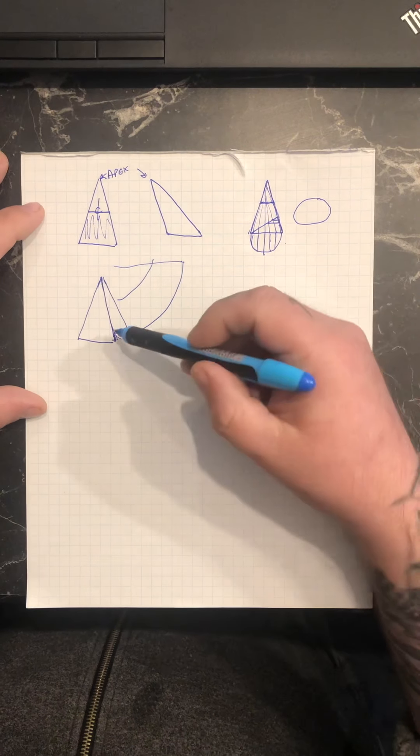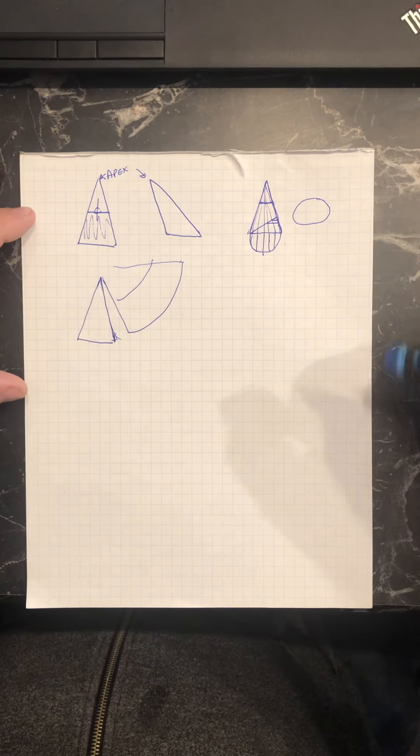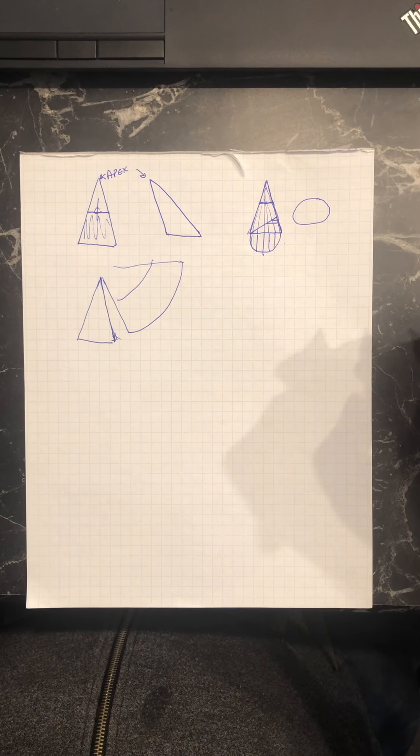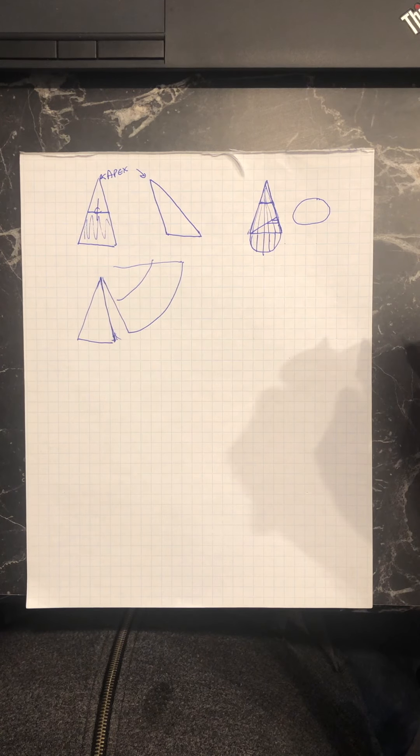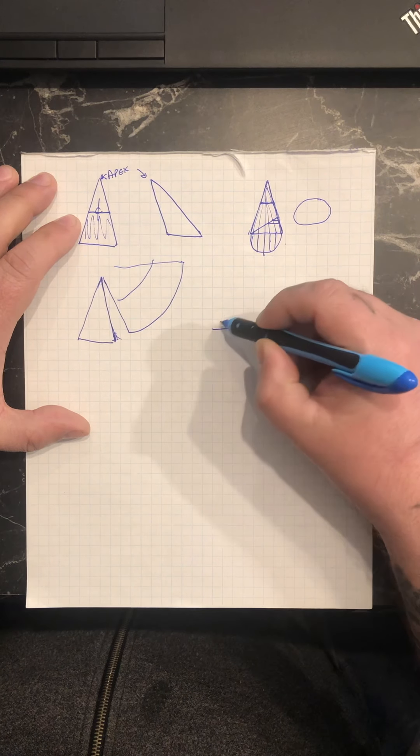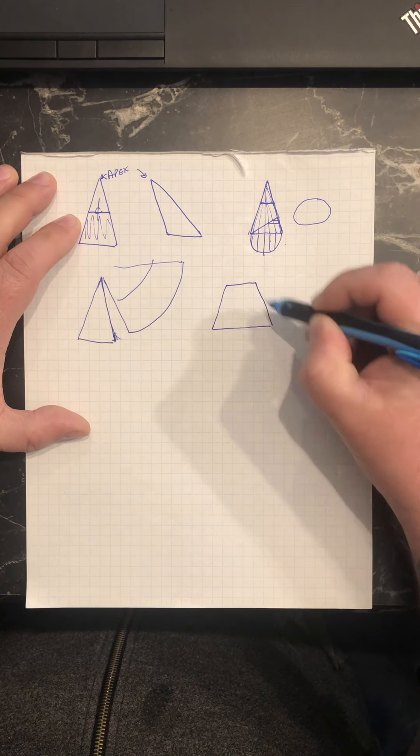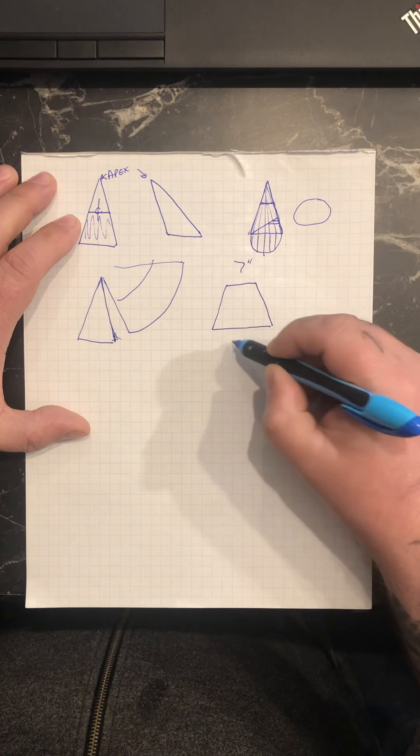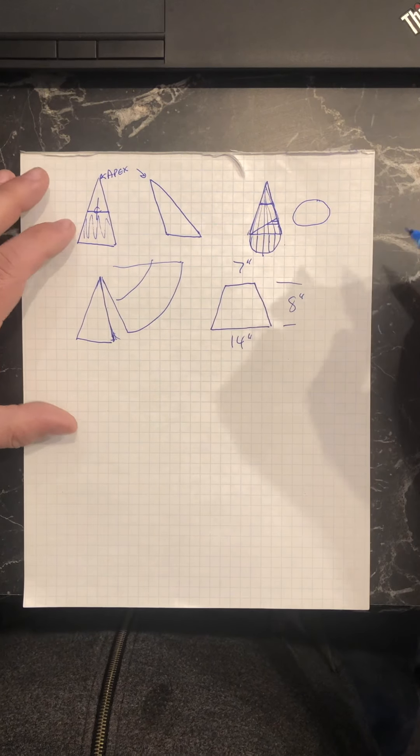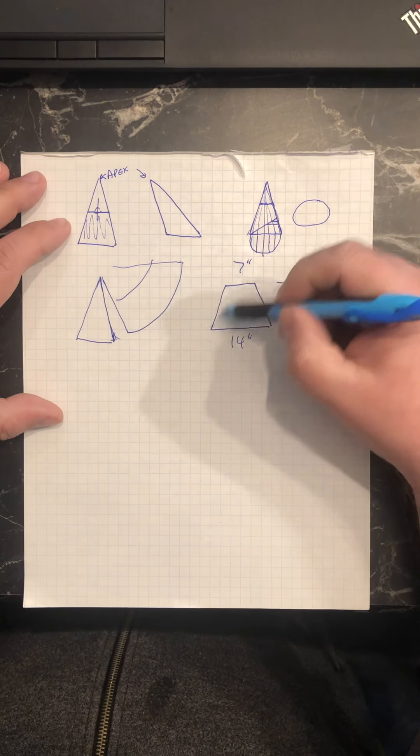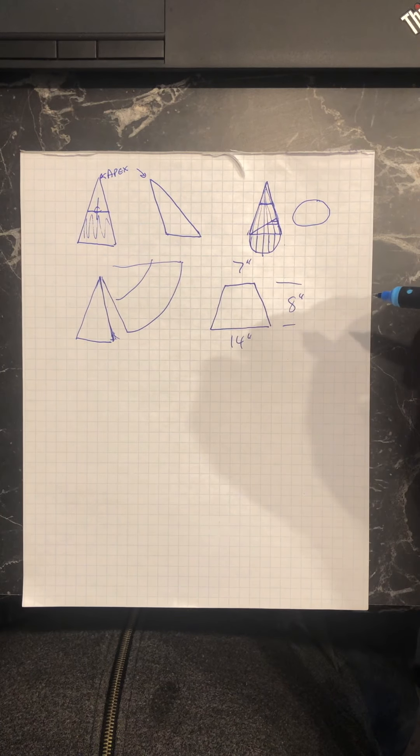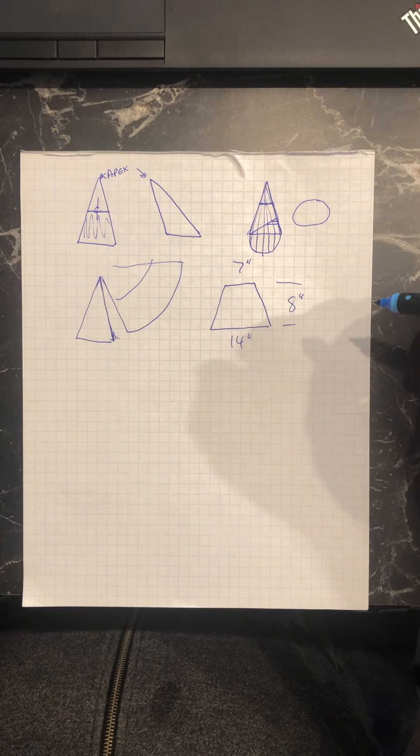Number seven, what is the slant length of a cone that has a 14 inch large diameter, a seven inch small diameter, and a height of eight inches? So let's just draw that out: seven inch, 14 inch, eight inch diameter or height, sorry. So we have to figure out what the apex is first. So what's the formula for that, you guys remember?